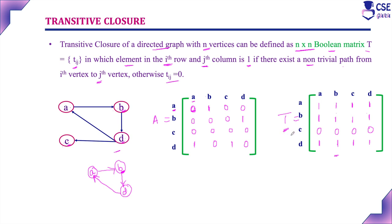Warshall's algorithm is used to find the existence of path between all pair of vertices in the given graph. In this session, we have discussed the logic of transitive closure to implement Warshall's algorithm. In the next session, we are going to discuss how to find this transitive closure step by step using Warshall's algorithm.